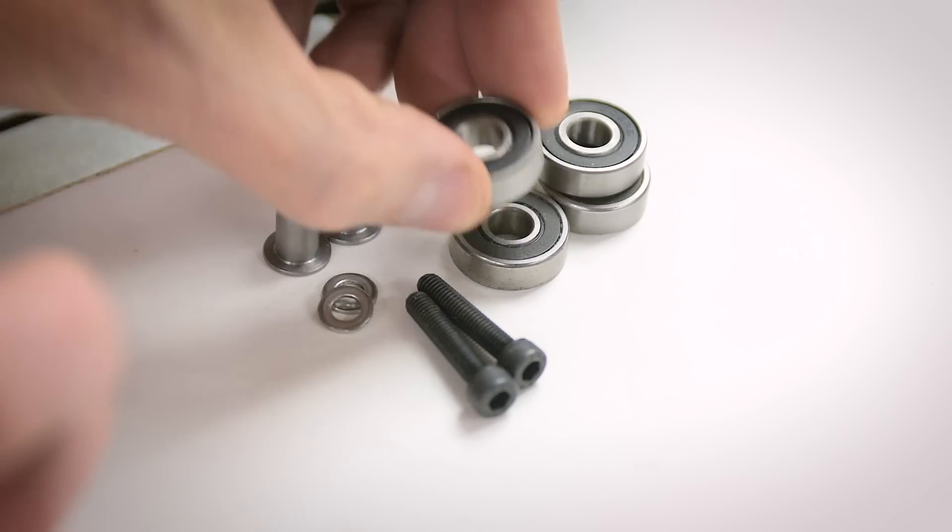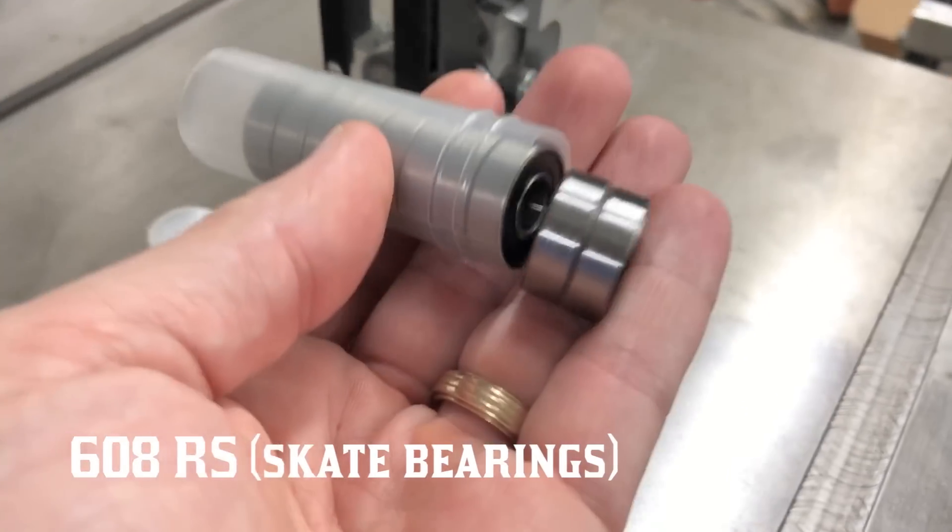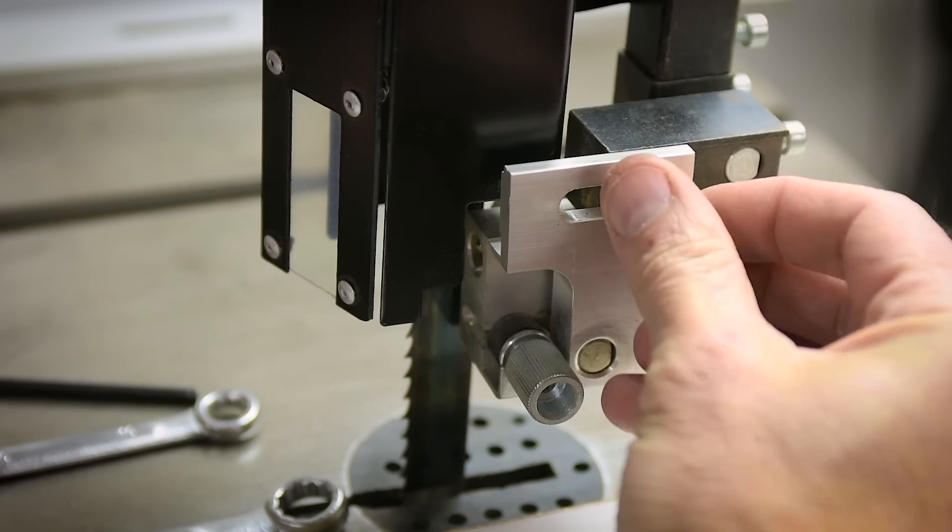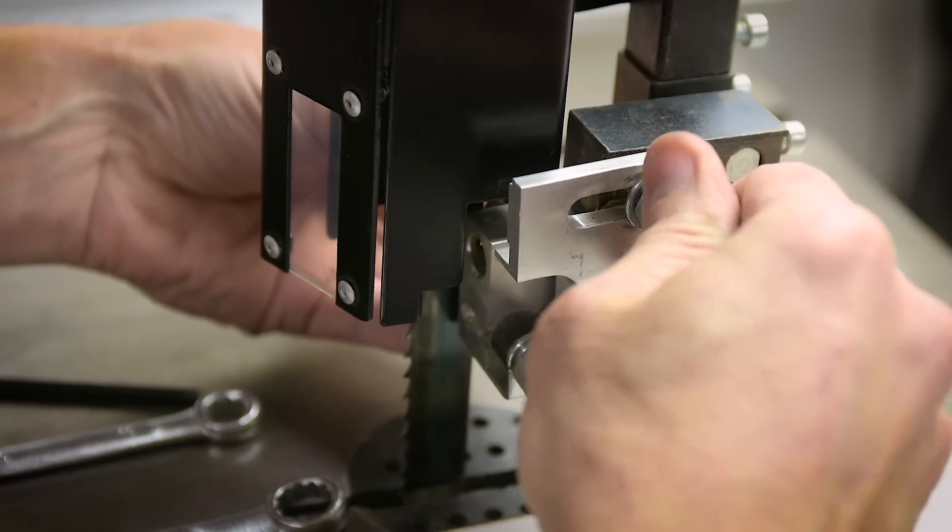This upgrade is turning out to be super inexpensive. I got this 10 pack of bearings for $7 on Amazon. I figured it would be a good idea to take off the guide block and clean it up before I put it all back together.